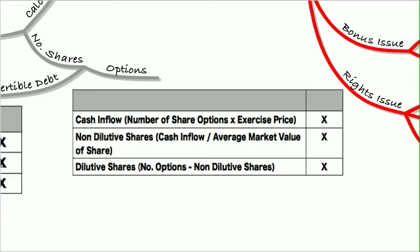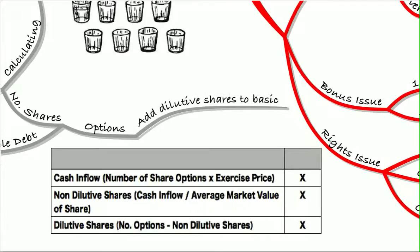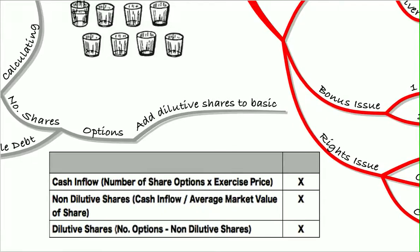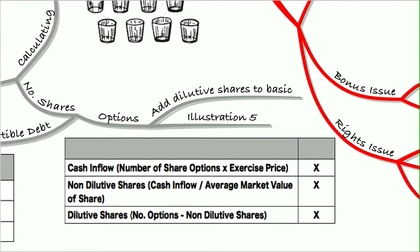The difference between the number of options and the dilutive shares, or the non-dilutive shares that we just calculated, will give us our dilutive shares. So the number of options less the non-dilutive shares gives us our dilutive shares, which we add to our basic shares to get our diluted number of shares. And again we add those shares to the basic, and we did that in illustration five.